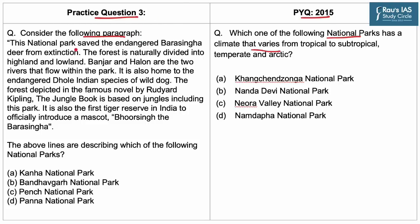Consider the following paragraph: This national park saved the endangered Barasingha from extinction. The forest is naturally divided into a highland and lowland. Banjar and Halon are two rivers that flow within this park. It is also home to the endangered Dhole, the Indian species of wild dog. The forest was depicted in the famous novel by Rudyard Kipling, The Jungle Book, which is based on jungles included in this park. It is also the first tiger reserve in India to officially introduce a mascot called Bhursingh the Barasingha. The above lines are describing which of the following national parks: Kanha, Bandhavgarh, Pench, or Panna National Park?